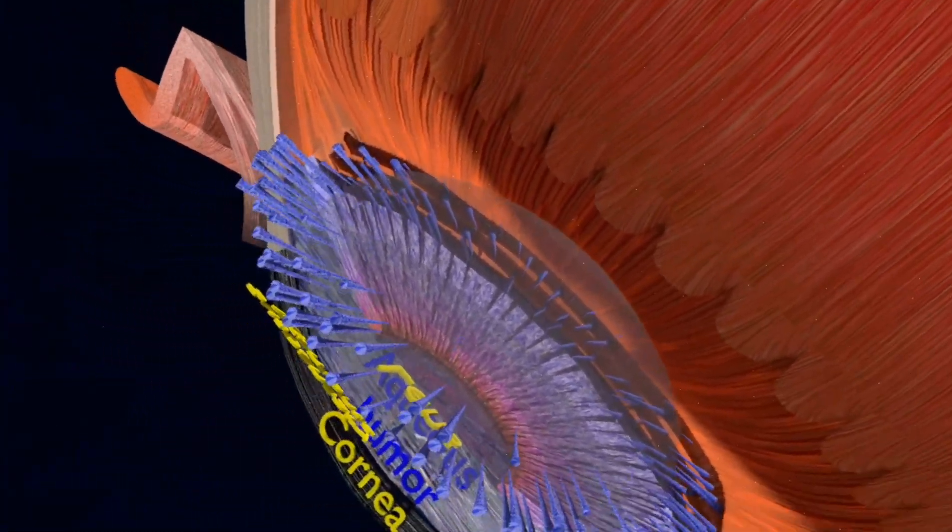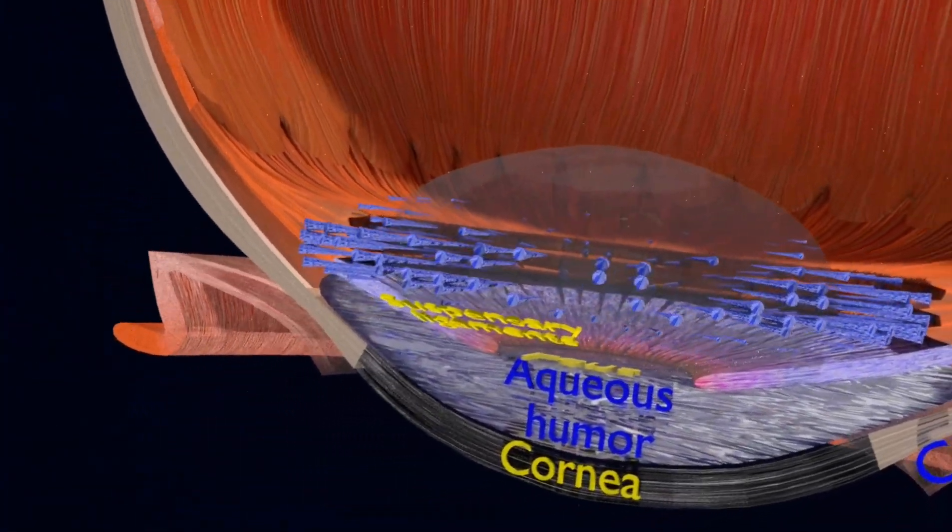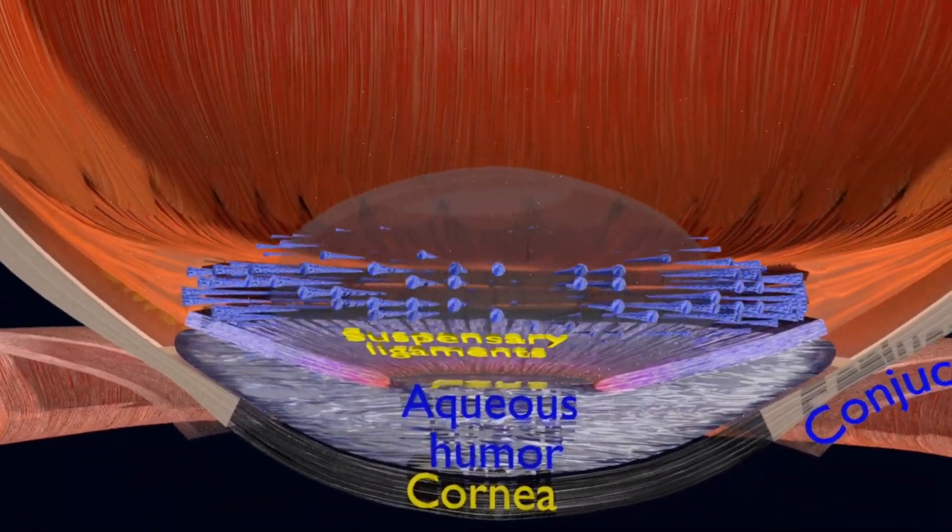Main types of age-related cataracts are nuclear sclerosis, cortical, and posterior subcapsular.